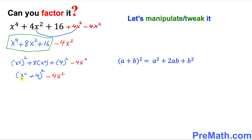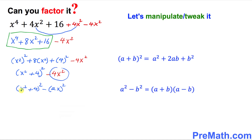Let me tweak it a little bit more. I'm going to leave (x² + 4)² and write the last term as minus (2x)², which is the same as 4x². Now this represents a difference of two squares — this square minus this square.